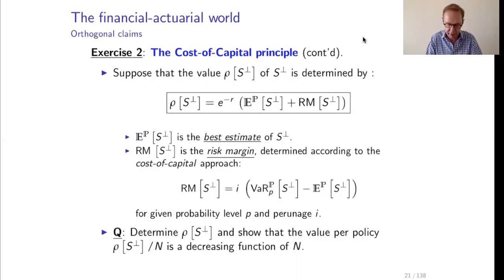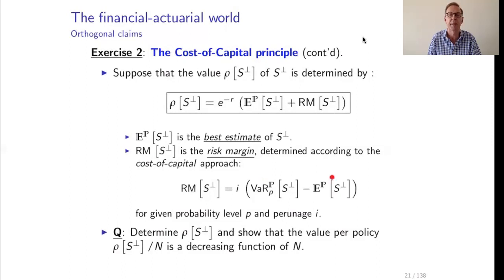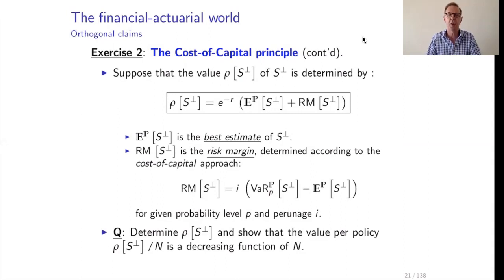What does this risk margin mean? If we price the claim as the best estimate, we have the expectation available. Now as a risk margin, suppose i equals one: then we add the value at risk minus the expectation, giving us the 99.5th percentile as the price. If we charge that premium we will be 99.5% sure that we can pay all claims. Of course this is not a realistic premium — that would mean charging almost the maximum possible claim value as an insurance premium, and we cannot sell such a contract.